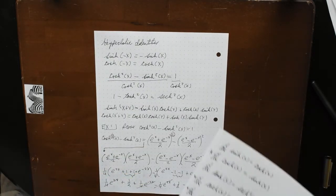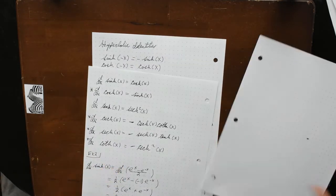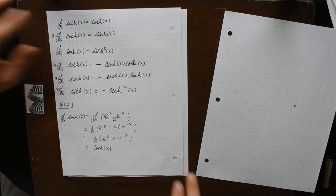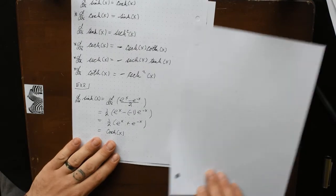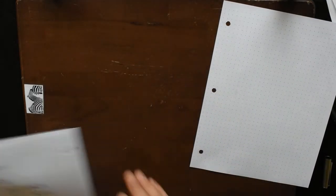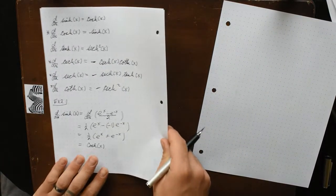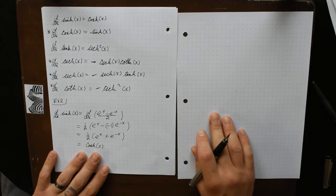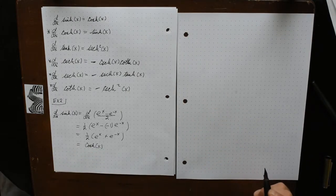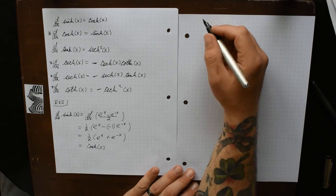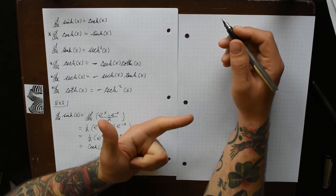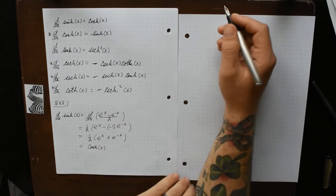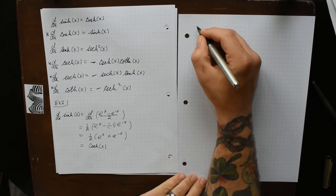Always look for a big picture approach before you dive into an element-level approach. These exponential definitions are the most foundational — they will always work. But there may be easier paths, so don't get caught up in a white-knuckle approach to calculus. Always take a step back and ask yourself: is there an easier way to approach this problem?